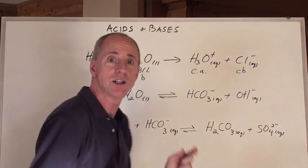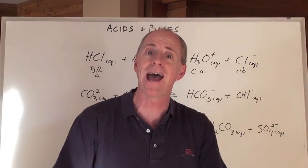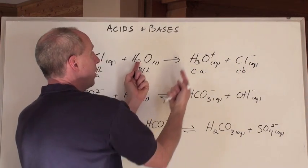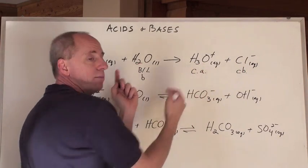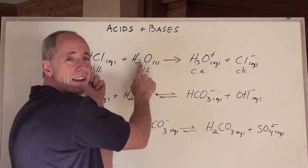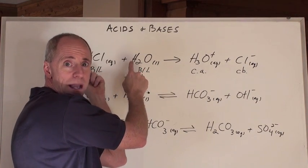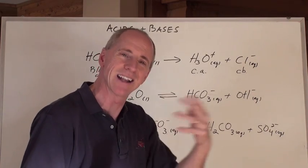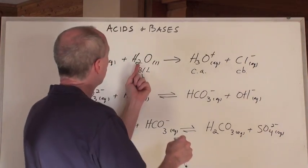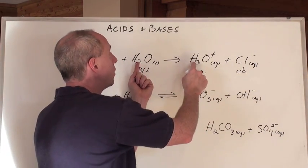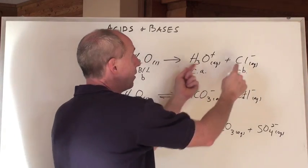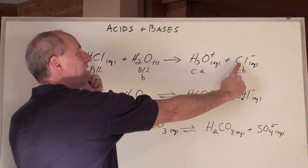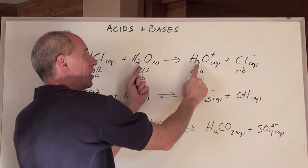So, this is a Bronsted-Lowry acid-base pair, and water and hydronium are a Bronsted-Lowry acid-base pair. This is not an acid-base pair. This is the acid and the base reacting in the solution. It's not a conjugate pair. Conjugate's kind of like opposite. These two right here are just the products. These are the reactants. One pair, conjugate acid-base pair, another conjugate acid-base pair.